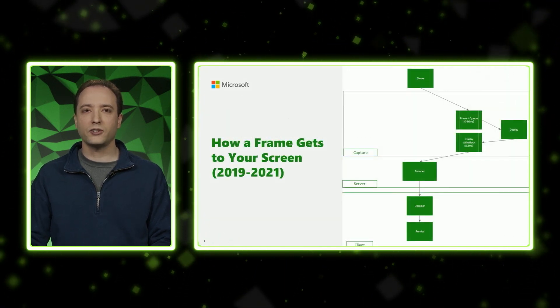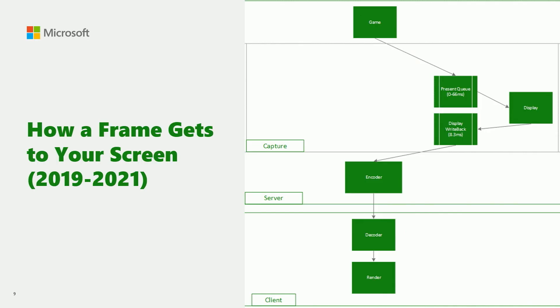In order to do that, let's talk about how a frame gets from your game to a user's screen when it's streaming. We start at the top with a game rendering and then presenting a frame. The next step — that big box — is capturing. The concept there is that we have to get it into a format that we can encode, going from the many different presentation options and formats your game can use to a single format. After that, it goes into an encoder, which gets it ready to go over the wire for decode and render on the user's device so that they can see it.